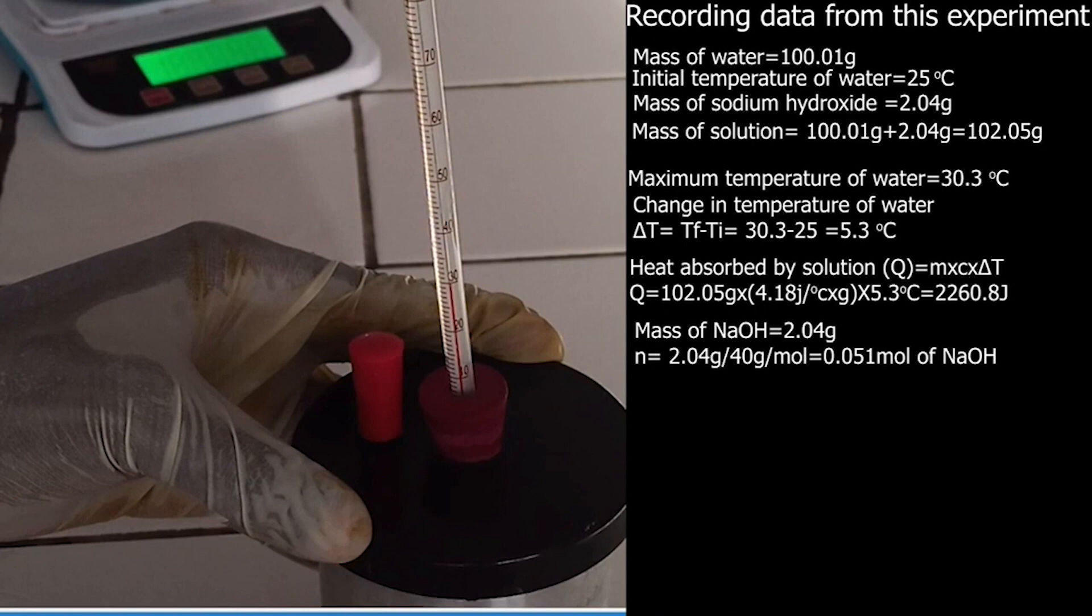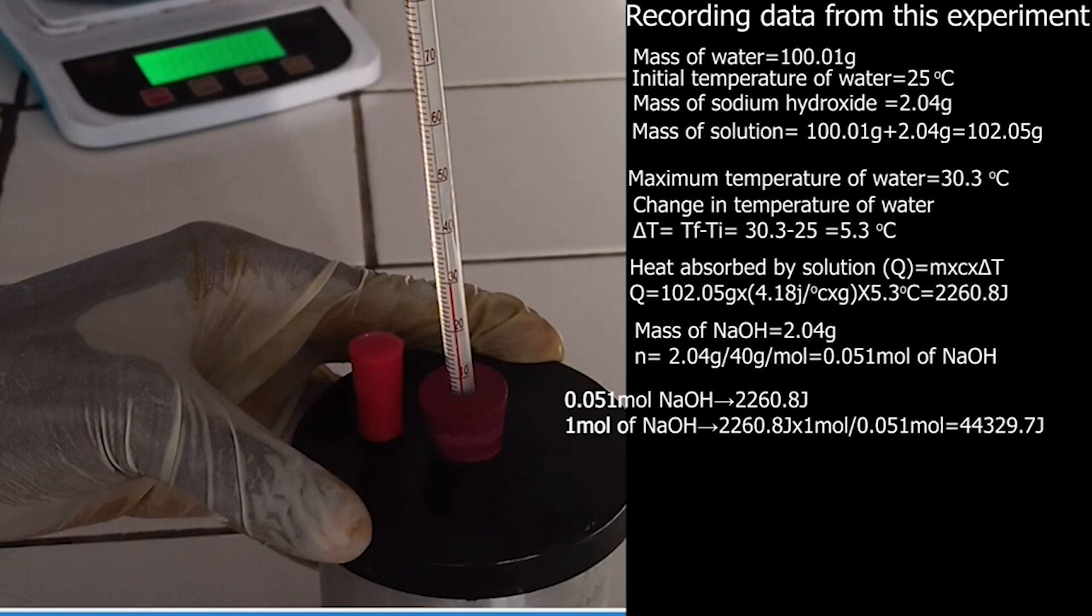When 2.05 grams of sodium hydroxide are dissolved completely in water, it releases 2260.8 joules. Hence when 1 mole of sodium hydroxide are dissolved completely in water, it releases 44,329.7 joules.